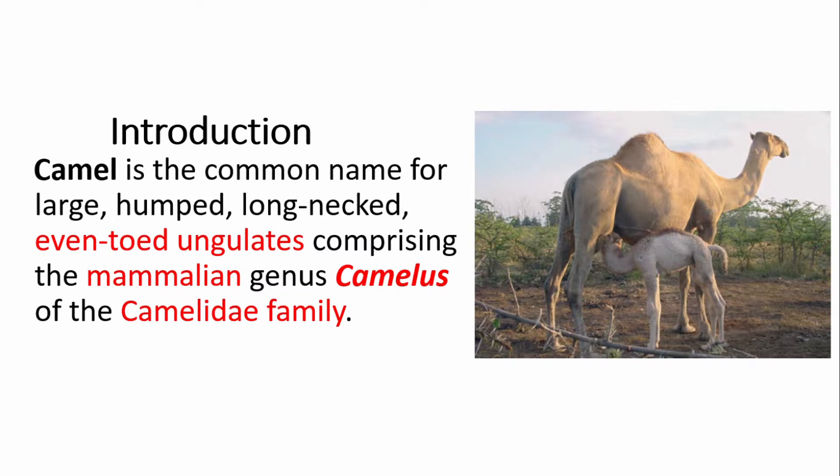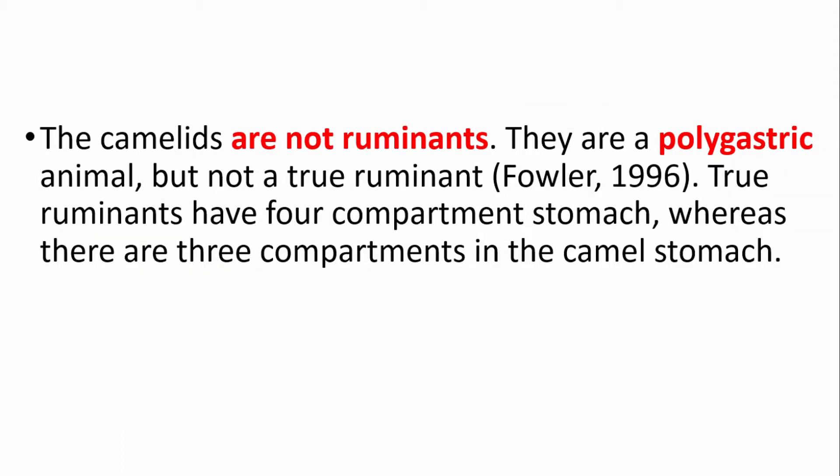Introduction to camels. Camels is a common name for large-handed, long-necked, even-toed ungulates, comprising the mammalian genus Camelus of the Camelidae family. The Camelidae are not true ruminants; they are oligogastric animals but not true ruminants according to Fowler 1996. True ruminants have four-compartment stomachs whereas camels have only three compartments.